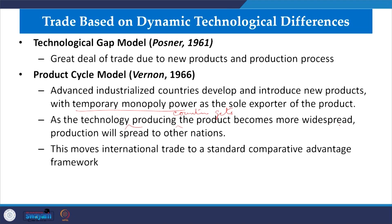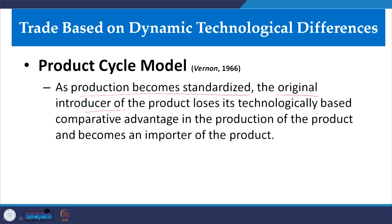The product cycle model moves international trade into a standard comparative advantage framework and has a time component showing how things revolve over time. Vernon's 1966 product cycle theory states that as production becomes standardized, the original producer loses its technological comparative advantage in production and eventually becomes an importer of the product.